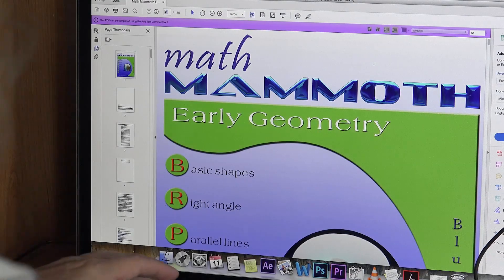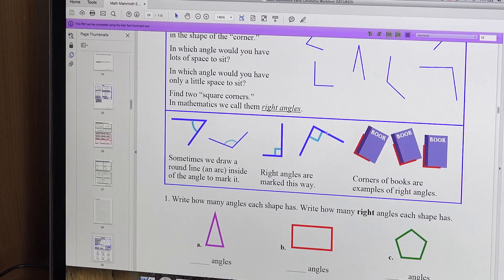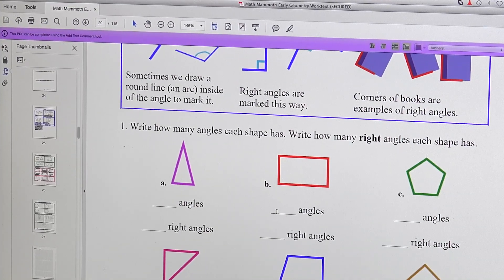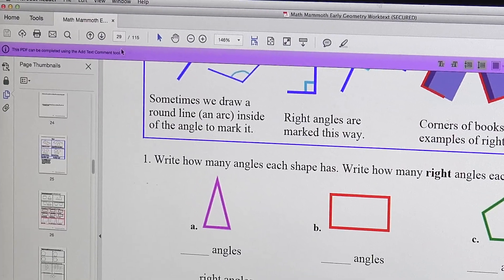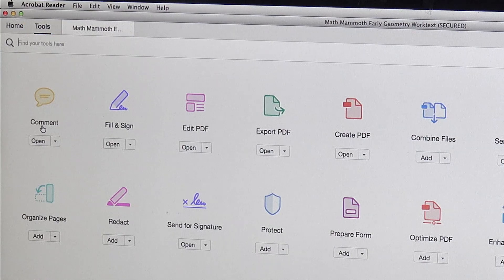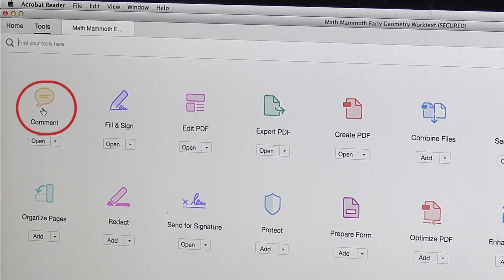Let's go down to page 29. Right angles. I scroll down here and here's some lines so I could add my answers here. To do that I need to first go to this tools tab here and click once. And then click this comment. This area here where it says comment.